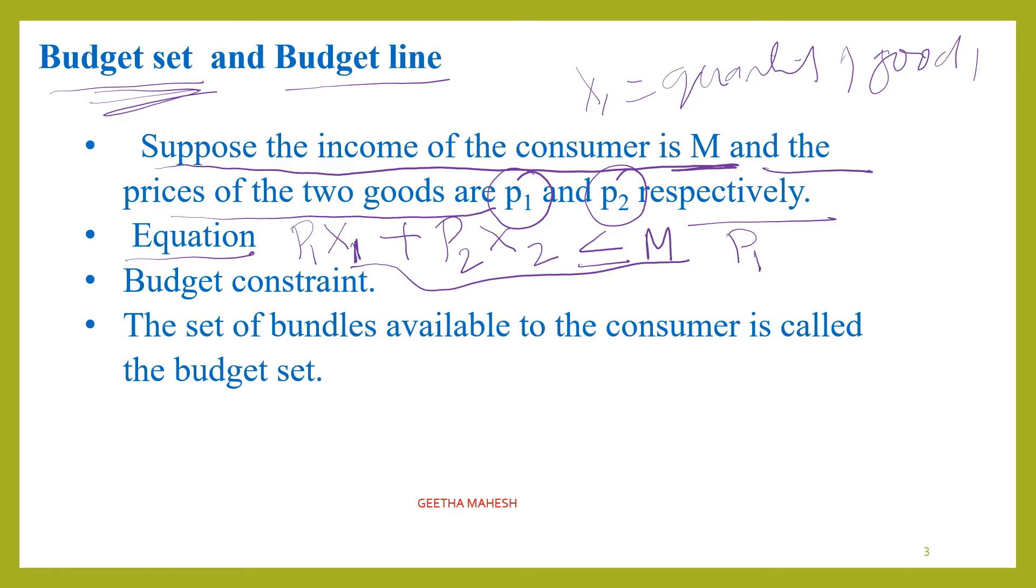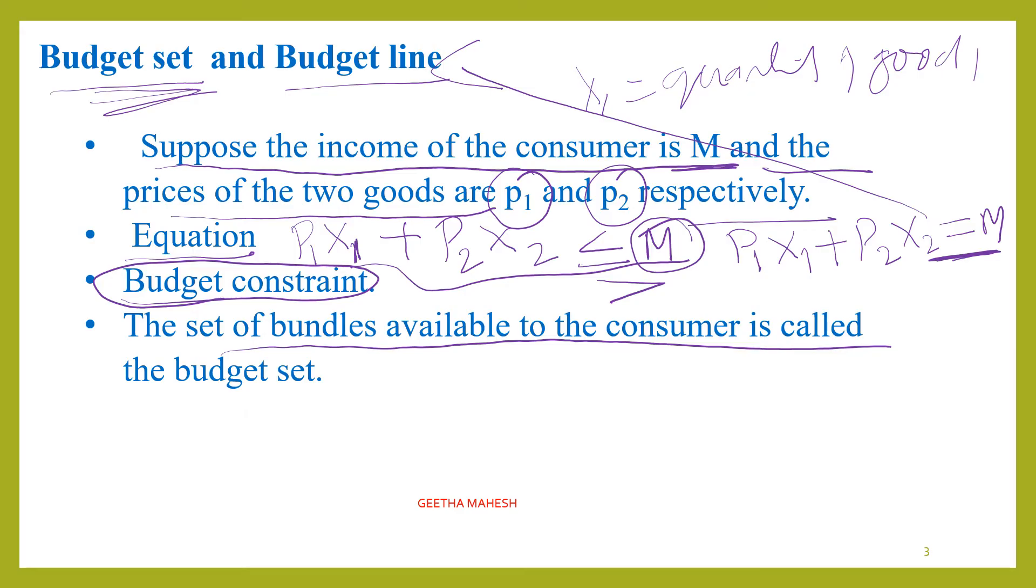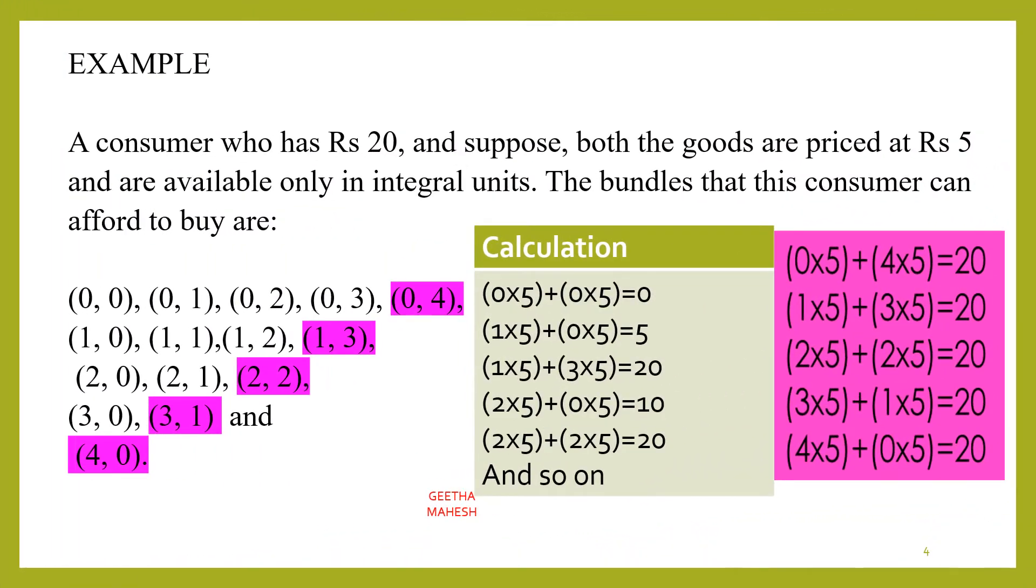If you consider the equation where p1 times x1 plus p2 times x2 equals the consumer's income exactly, this is the budget line. Budget set is a budget constraint - you cannot cross more than the availability of income. There's a restriction - you can buy combinations of those goods only when the cost is less than or equal to your income. The set of bundles available to the consumer is called the budget set.